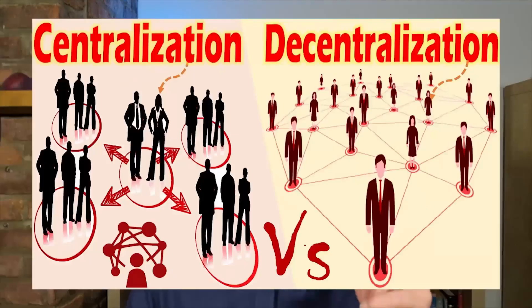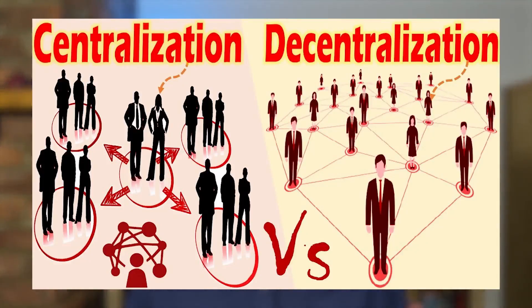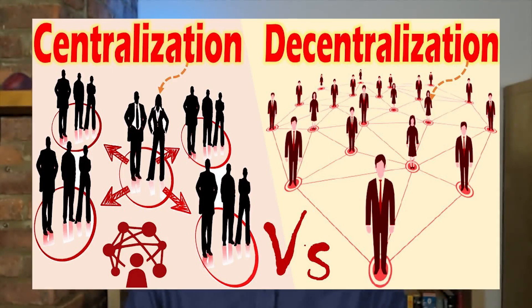Because traditional infrastructure networks are typically centralized, with a few large entities controlling the development, management, and maintenance of infrastructure assets. This centralization can lead to inefficiencies, high costs, and a lack of transparency, which is what DePIN tries to solve.